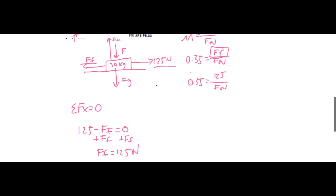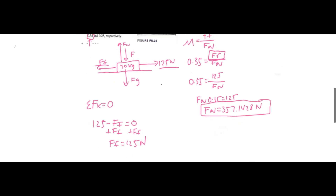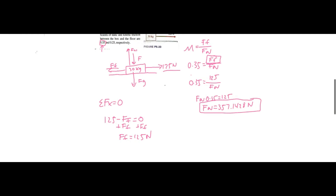If we multiply by Fn on both sides, Fn times 0.35 equals 125. Multiply both sides by 0.35 and get Fn equals — it's going to be a decimal but somewhere around this range — 357.1428 newtons. So now we know Fn and we can calculate everything in the y direction.